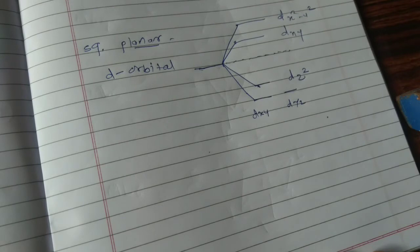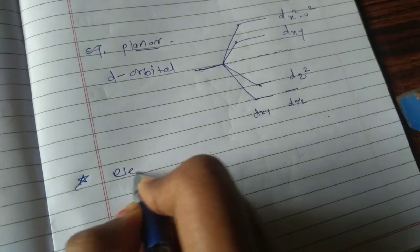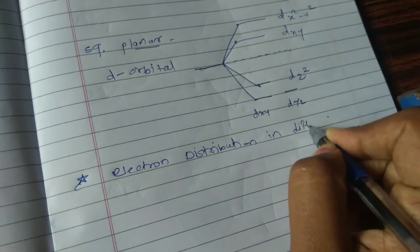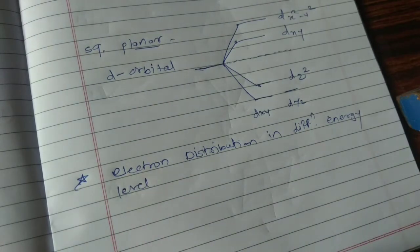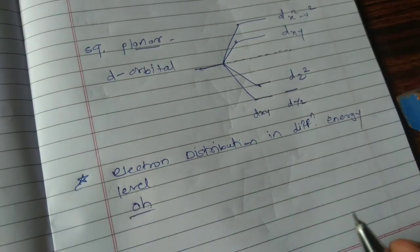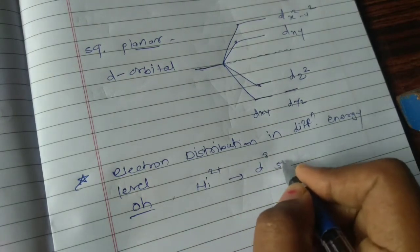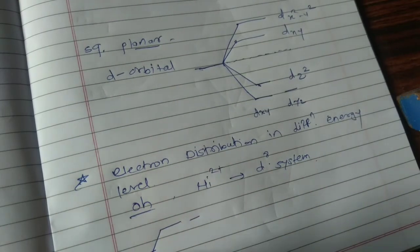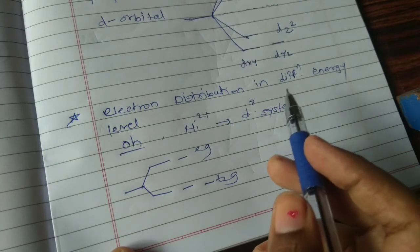Next we are going to learn electron distribution in different energy levels. In case of an octahedral molecule, let us take the example of Ni2+, which shows a d8 system. These 8 electrons are distributed in the octahedral complex as follows. The octahedral complex is divided into two energy levels, T2G and EG, and the electrons are distributed accordingly — filling all 8 electrons across both levels.